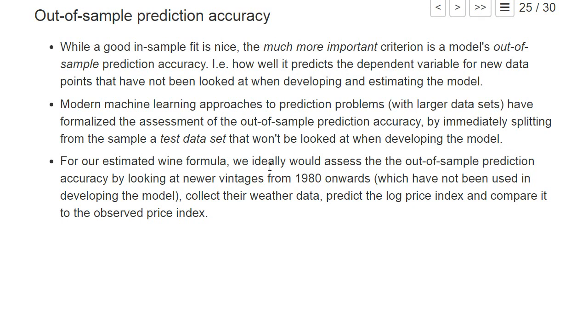Here what we actually would want to do is use newer vintages whose auction prices were not known at the time Ashenfelter developed their model. So at least from 1980 onwards or maybe even later years, and look how well the model of Ashenfelter works there. We would need to collect the weather data and compute the price index and compare the actual price index with the price index we would predict from the model.